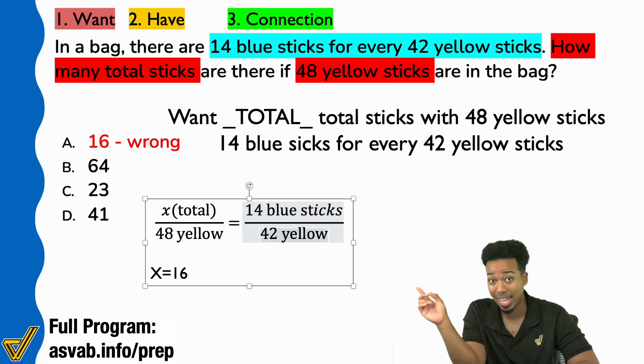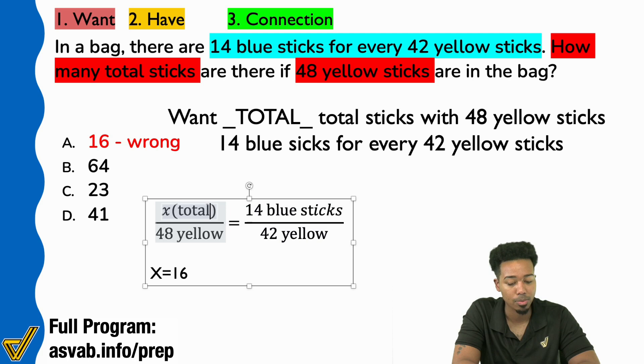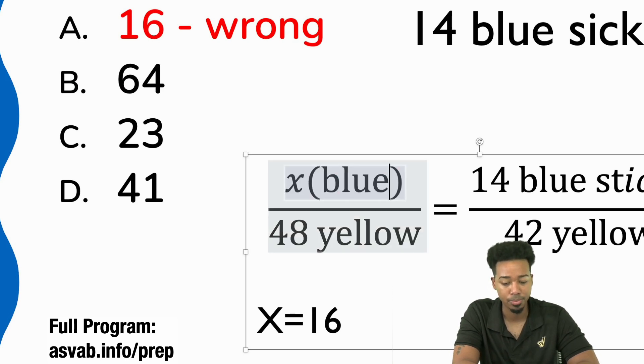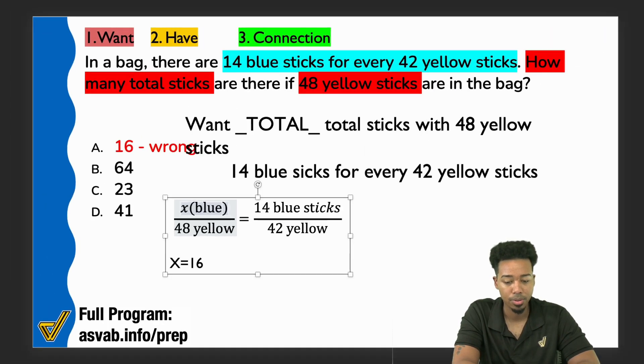But what's the big problem? The big problem is that you have x for the total and 14 for the blue. Those aren't being compared in the same way. Because it was set up like that, this doesn't actually represent total. This right here actually represents blue.